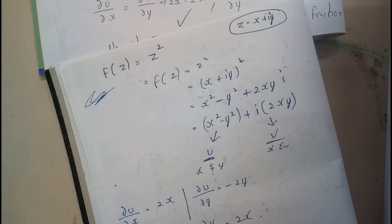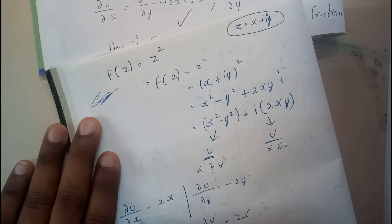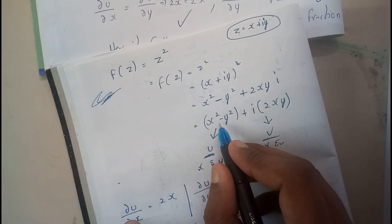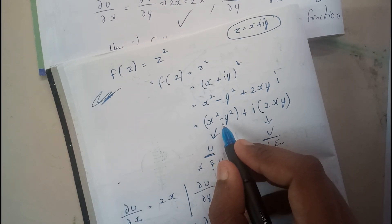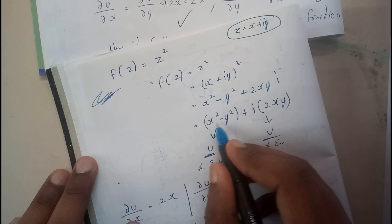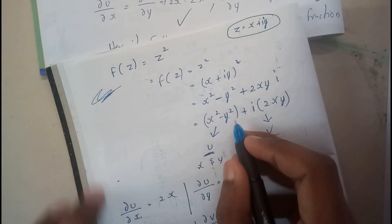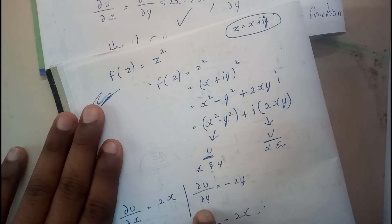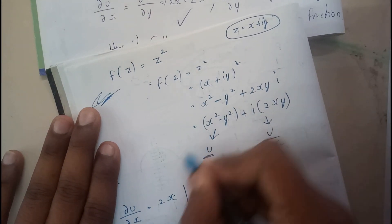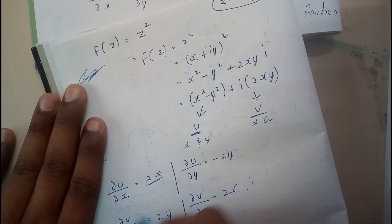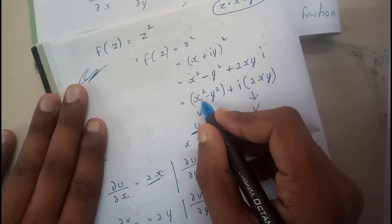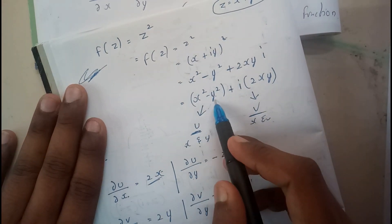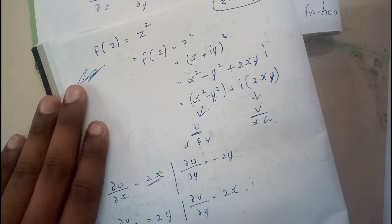For ∂u/∂x, we look for x terms only. In partial differentiation with respect to x, if there is no x in a term, that term is treated as a constant. Similarly for ∂u/∂y: the x² term has no y, so it becomes a constant, and −y² differentiates to −2y. These are all continuous functions.